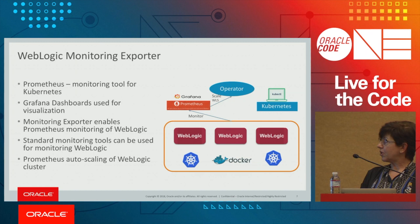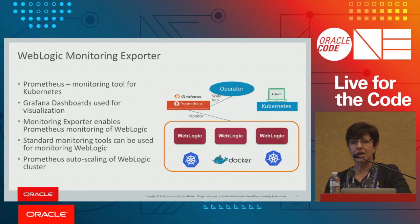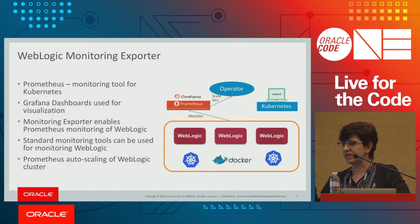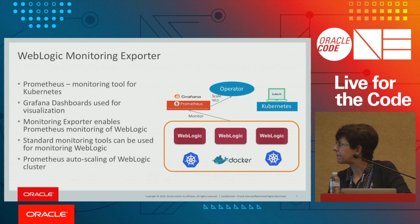The Monitoring Exporter is open source on GitHub. All these utilities have GitHub projects — you can find the operator at GitHub/Oracle/WebLogic-Kubernetes-Operator, with all code and README documentation. You can clone it, and the operator image is on Docker Hub. WebLogic images are in Docker Store and the Oracle Container Registry.